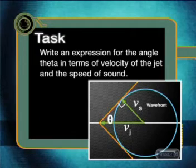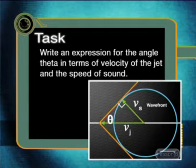Now you should be able to tackle the task. Can you work out from this diagram how to use trigonometry to write an expression for the angle theta in terms of the velocity of the jet Vj and the speed of sound Vs? Thank you for joining me today. This brings us to the end of our series of lessons on Waves in the Real World. I hope that you have enjoyed the series and that you now have more of an appreciation for how our scientific knowledge helps us to understand the real world that we live in.